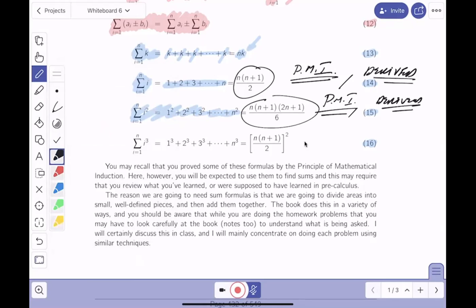In Math 120, you proved this was equivalent to this. How'd you do that? You proved this by PMI. And if you had Math 120 with me, I also derived the formula. I actually derived it. I'm not going to say it's easy to derive, but I derived it. And by the way, in Math 120, you also did this.